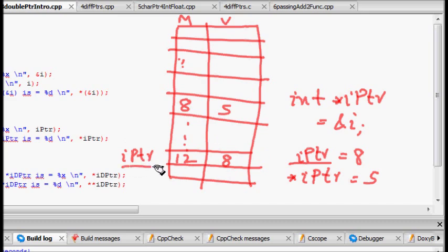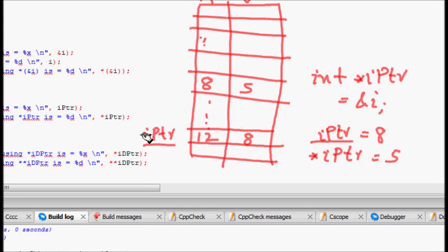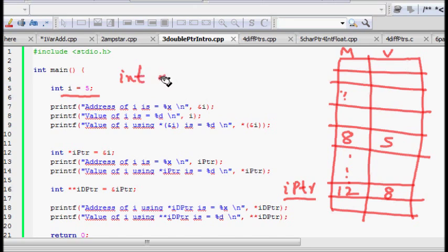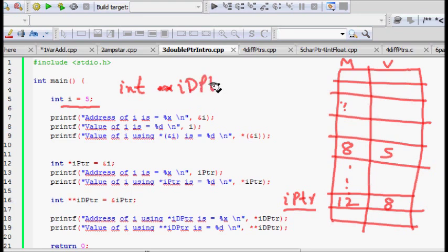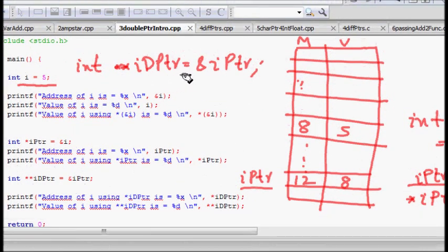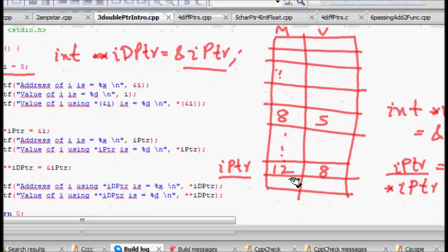Now, just to generalize, I can still I can ask that, can I store the address of iptr itself? So this is a pointer variable. If I want to store the address of that also, then you need to use a double pointer. And that's what is being done here, int star star, double pointer, two stars, i double ptr is equal to ampersand iptr. So this means now, basically, this double pointer to an integer is storing the address of the single pointer to an integer, iptr.